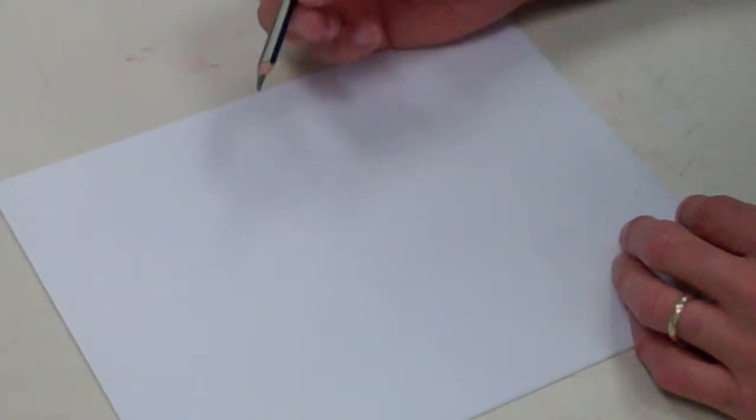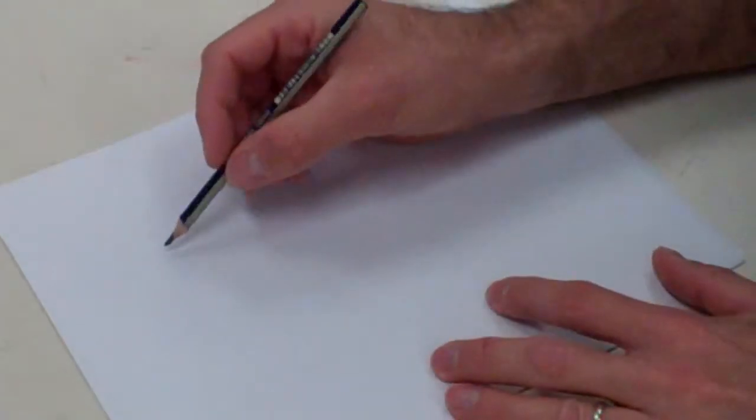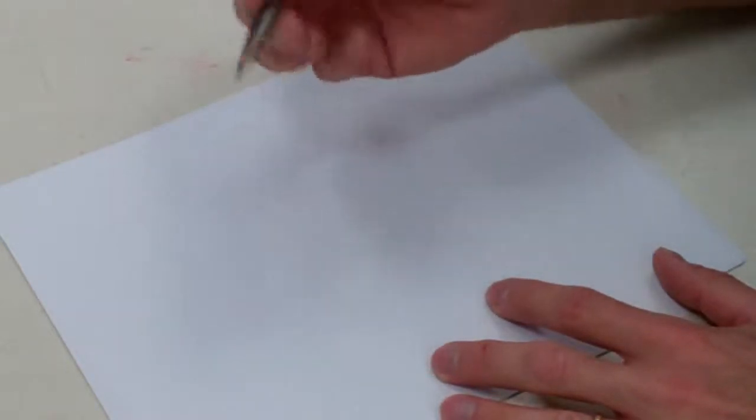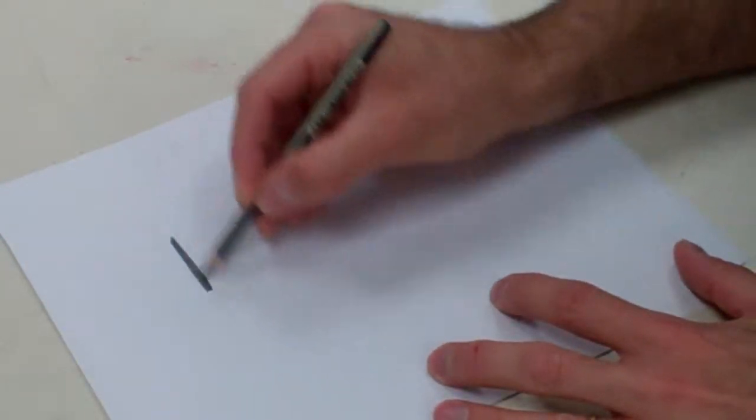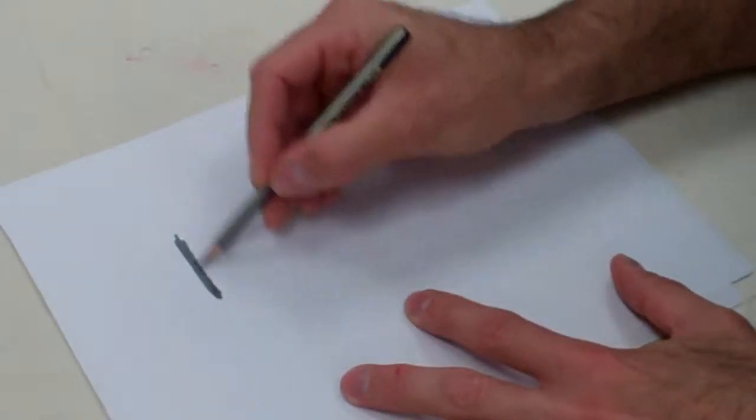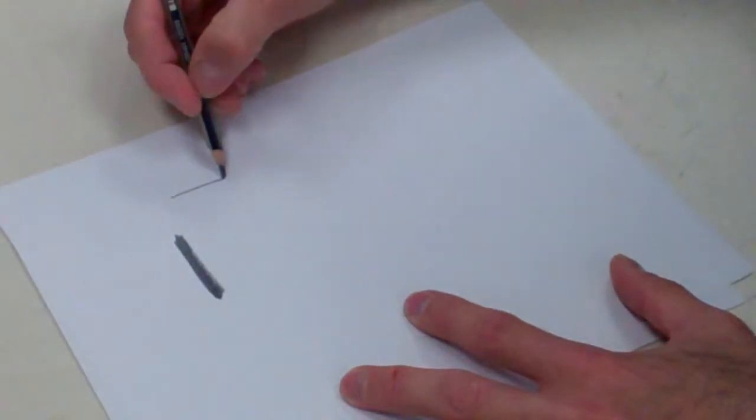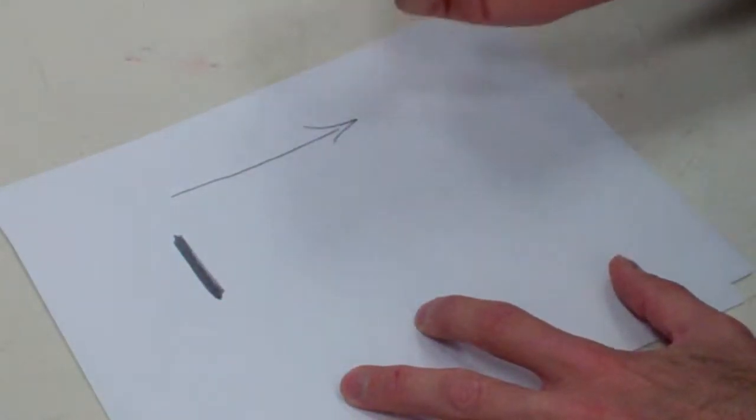We're going to talk just very briefly about the value scale. This is a 6B pencil, so it's pretty soft. But if I come over here and I just start to push down, you can see how dark it gets. As I start to go in this direction, I take pressure off my pencil.